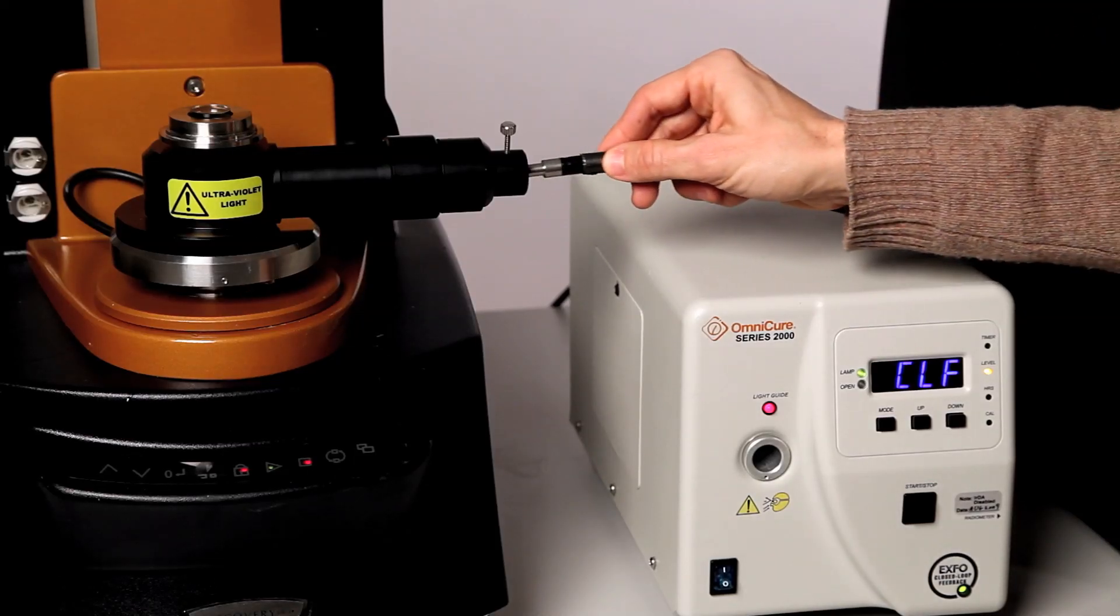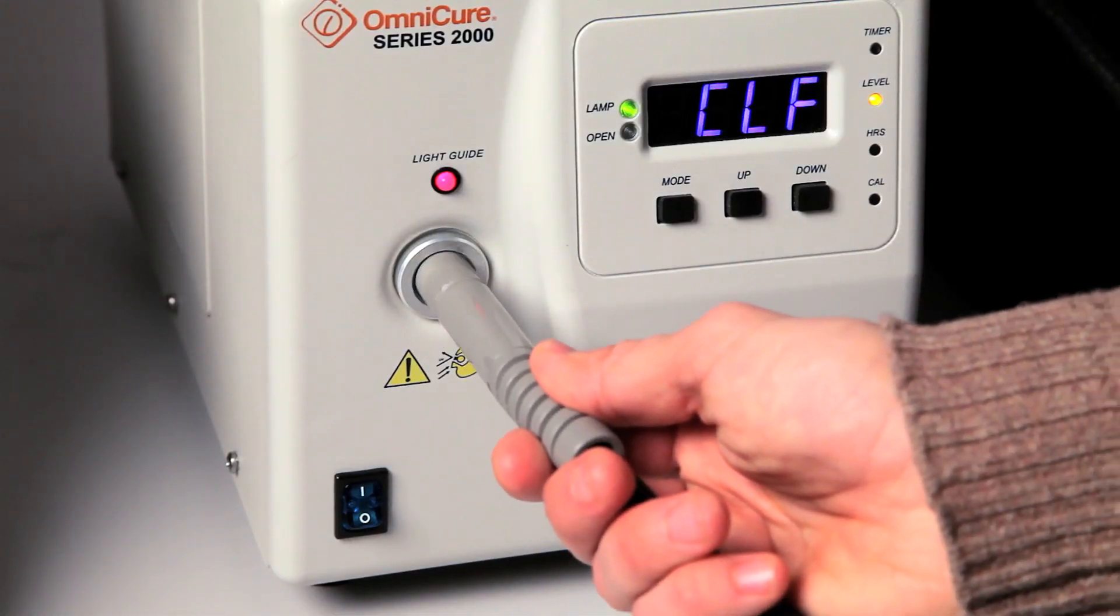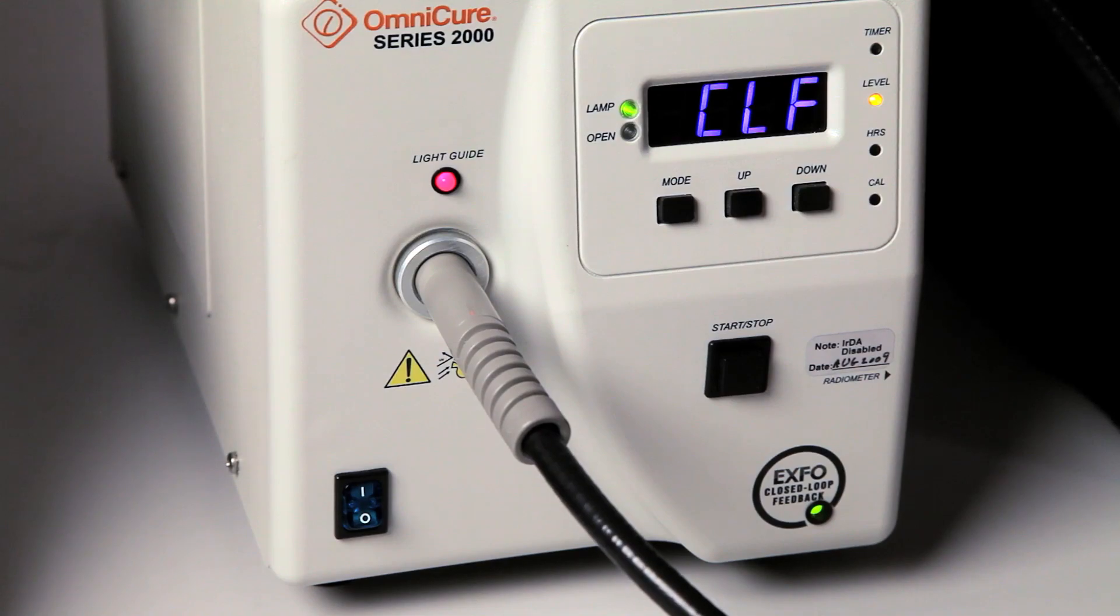With the UV lamp accessory already installed, we now can plug in the light guide. Notice that the software controls the lamp source through the event cable.